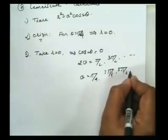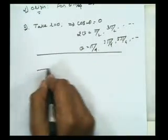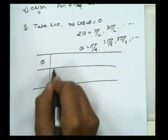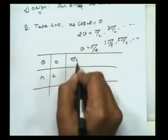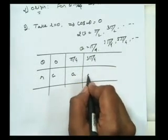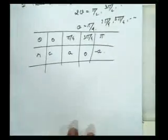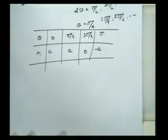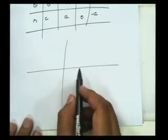Now find some values of r according to theta for the lemniscate. For theta = 0, r = a; theta = pi/4, r = 0; theta = pi/2, r is imaginary (curve doesn't exist); and theta = 3pi/4, r = 0. Using these values of r and theta, we can trace the complete curve of the lemniscate.